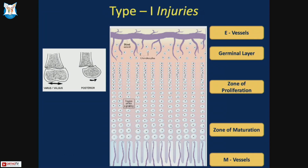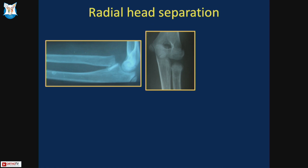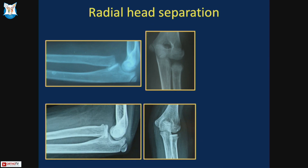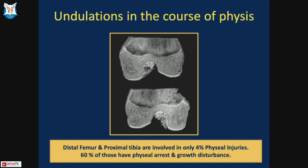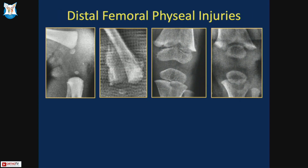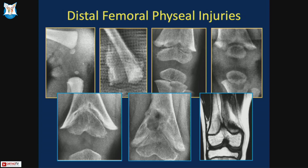Type 1 injuries occur through the junction of calcified and non-calcified hypertrophic cells. No vessels are involved, so Type 1 injuries have fewer physeal arrest issues. Radial head separation is an example where reduction can achieve full range of motion without growth arrest. However, physes with many undulations, like the distal femoral physis, carry a 60% rate of physeal arrest even with Type 1 injury. A case example shows a distal femoral physeal injury treated conservatively that remodeled well but eventually developed a central bar requiring excision.